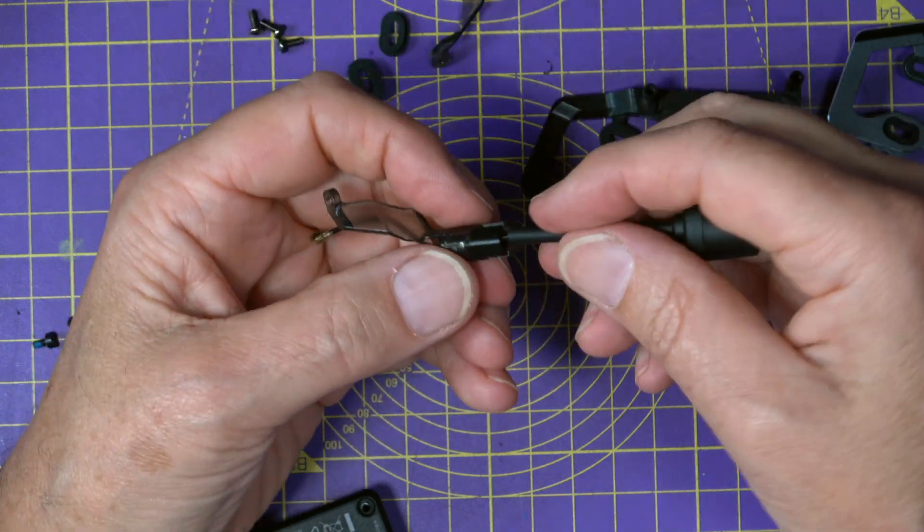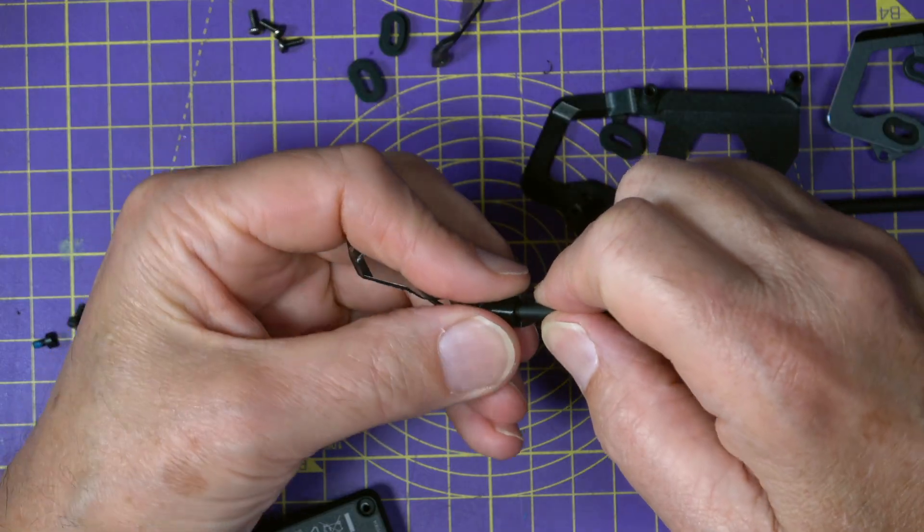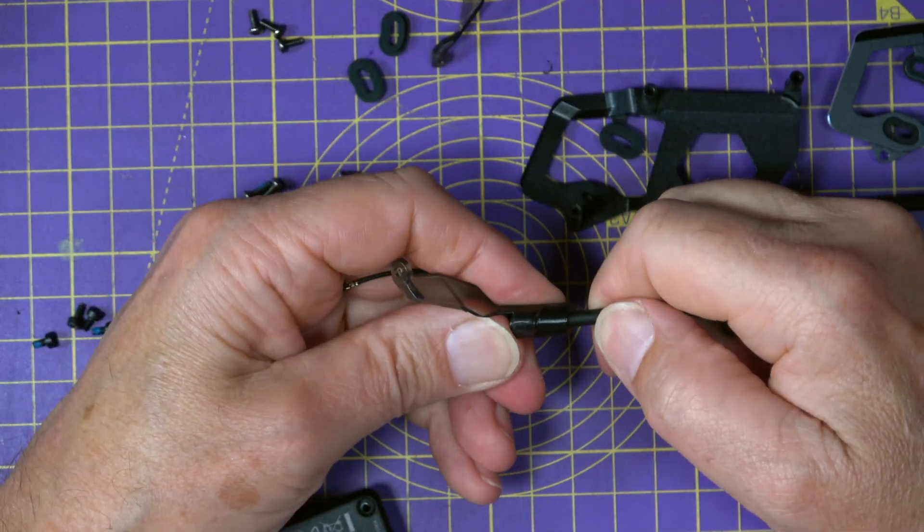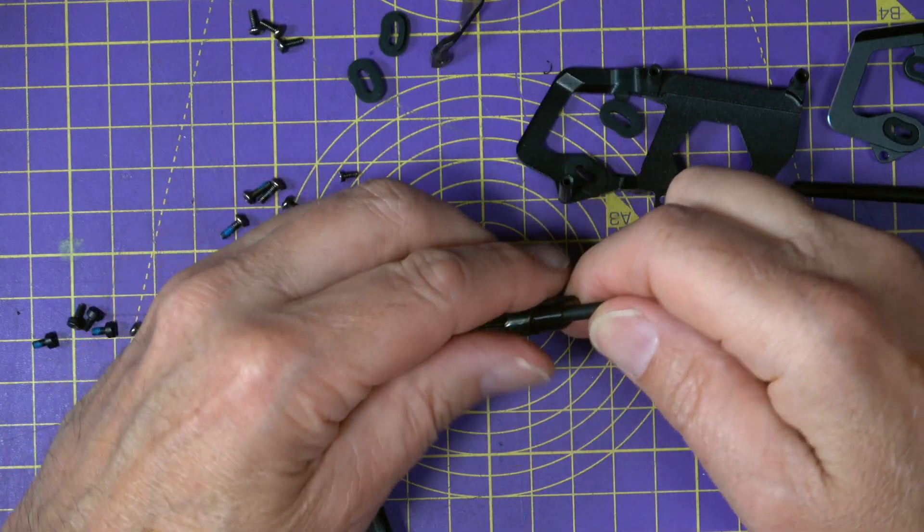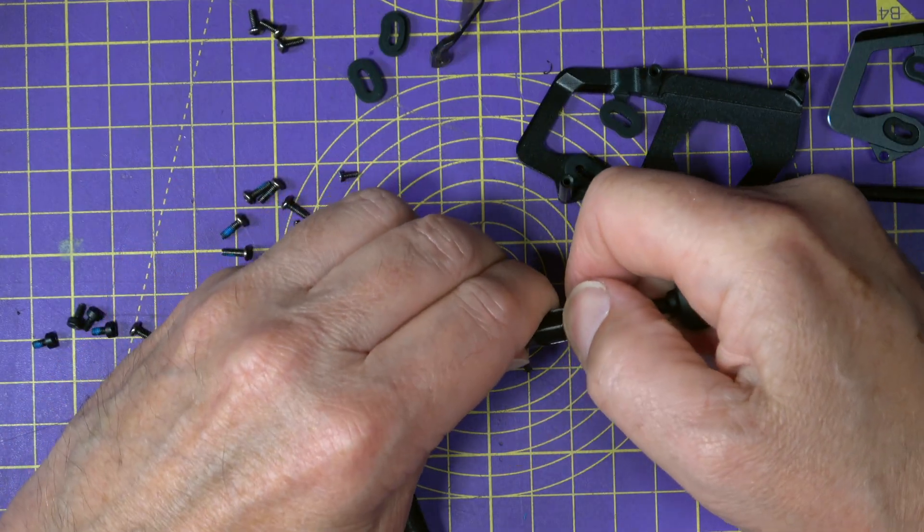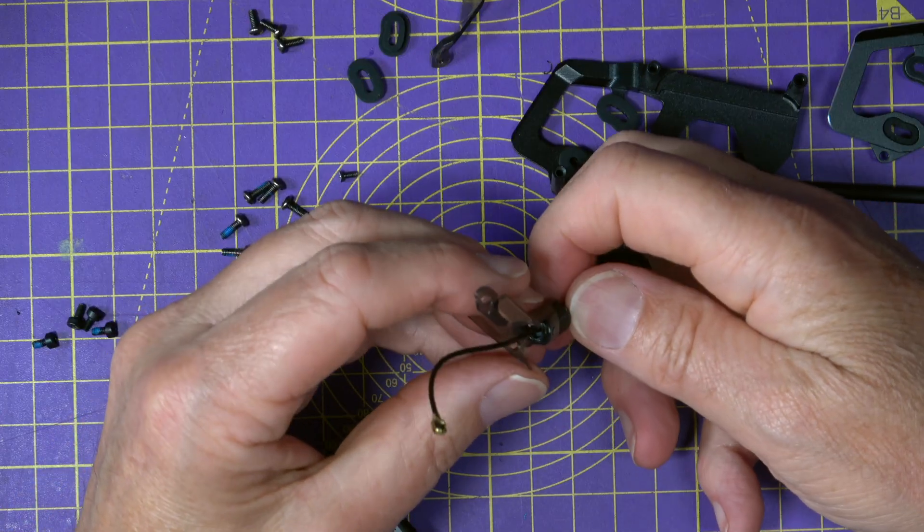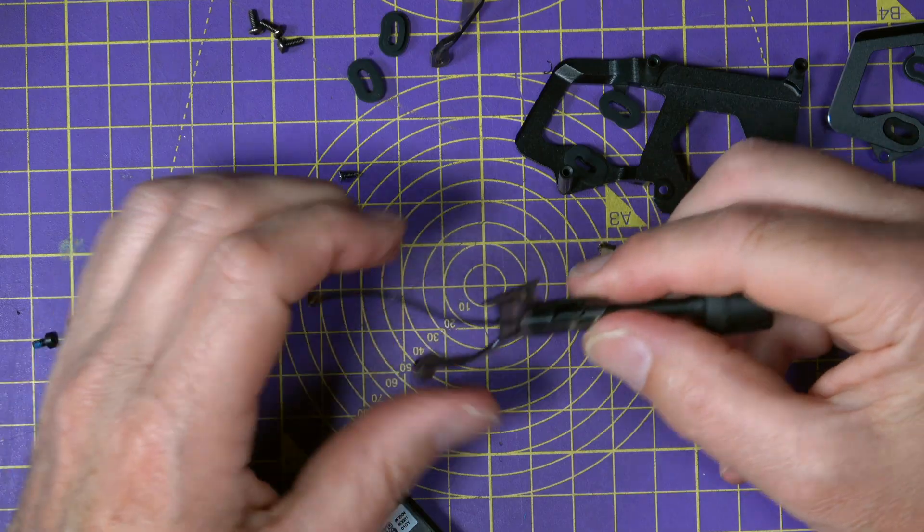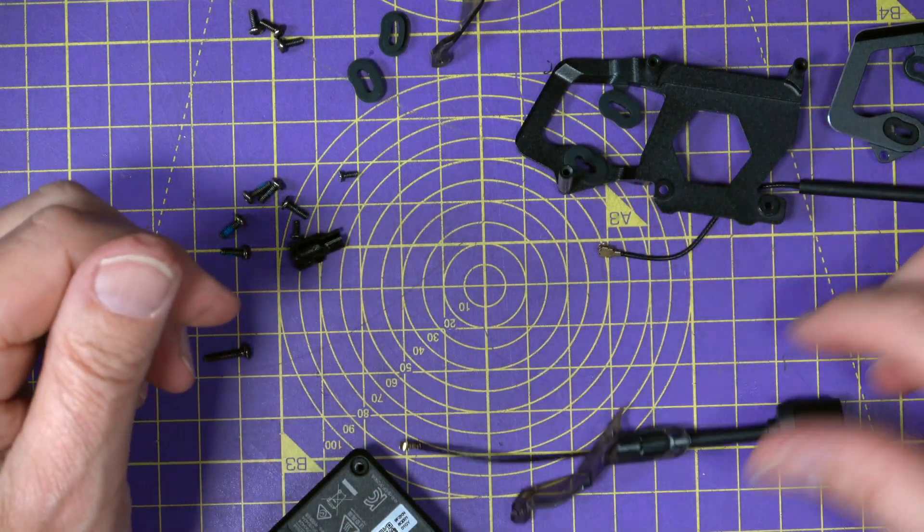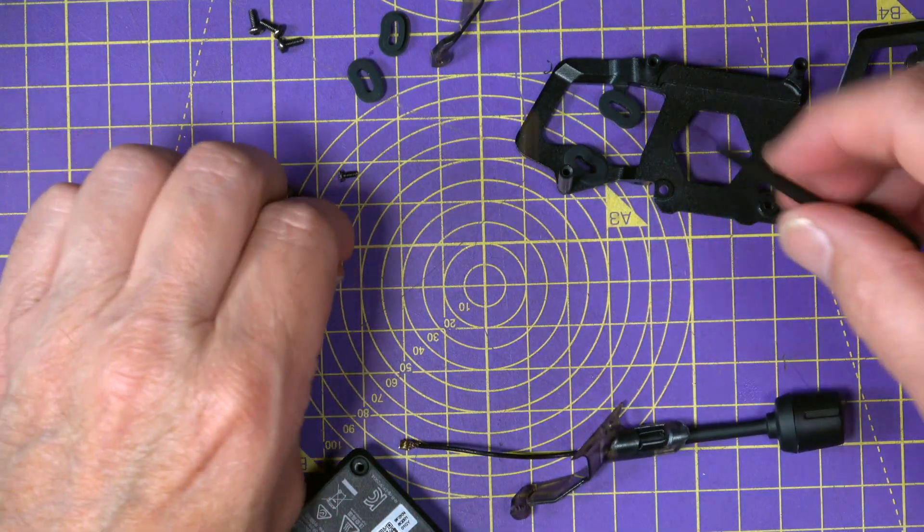And then once that's in there, you can gently just push the antenna down through until it gets to the bottom, which I found to be just about the right distance. You need to give it a bit of a push. There we go. Just be very careful. And you can do the same on the other side.